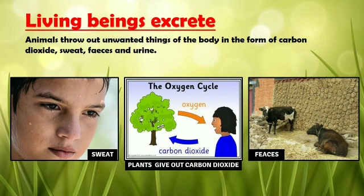Living beings excrete. Animals throw out unwanted things from the body in the form of carbon dioxide, sweat, feces and urine. They have special organs for this process; if not, the body gets affected. Plants also give out carbon dioxide during respiration. Dry leaves, stems, and rotting parts all get separated from the plants.